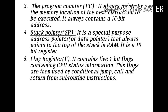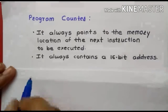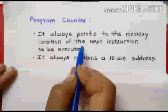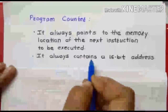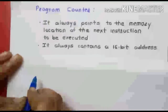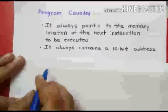The third register present in 8085 microprocessor is the program counter. The program counter is also a special purpose register. It always points to the memory location of the next instruction to be executed. It always contains a 16-bit address.